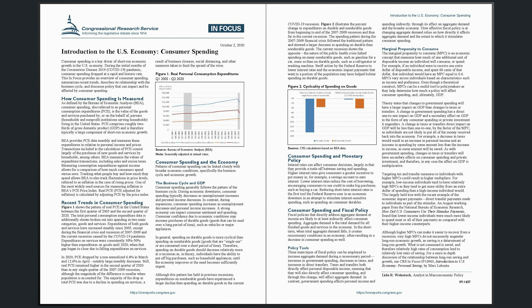The Business Cycle and GDP. Consumer spending generally follows the pattern of the business cycle. During economic downturns, consumer spending typically decreases as unemployment increases and personal income decreases. In contrast, during expansions, consumer spending increases as unemployment decreases and personal income increases. A strong economy can impact consumer sentiment and spending. Consumer confidence due to economic conditions may increase purchases of durable goods — goods that can be used over a long period of time, such as vehicles or major appliances.